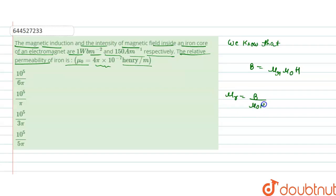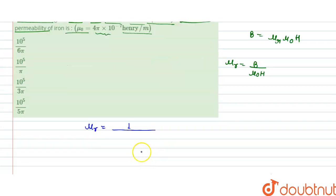μᵣ equals 1 upon... Simply we put all the values: μᵣ = 1 / (4π × 10⁻⁷ × 150), which equals 10⁻⁷.